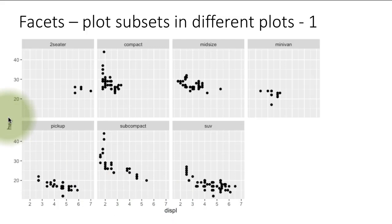Earlier we had done a single scatter plot of displacement versus highway mileage. Now what we're saying is, how about we do the same thing but split up the data for cars of different classes?